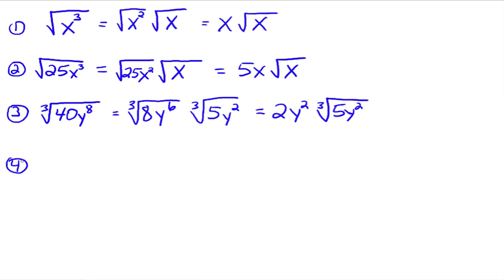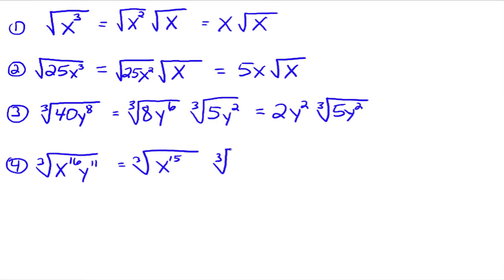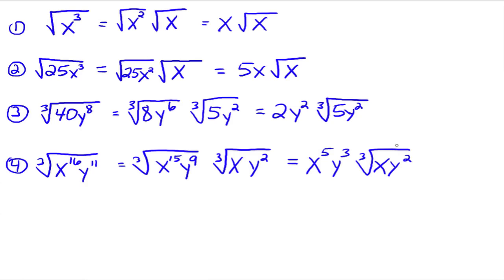The cube root of x to the 16th times y to the 11th. For x: 16 doesn't divide evenly by 3, so the largest number less than 16 divisible by 3 is 15, leaving x to the 1st as the remainder. For y: the largest number less than 11 divisible by 3 is 9, leaving y squared as the remainder. So the cube root of x to the 15th times y to the 9th simplifies to x to the 5th times y cubed, and the remaining factor is the cube root of x times y squared.